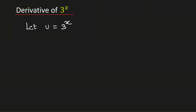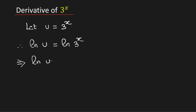Now taking natural logarithm on both sides, we will get natural logarithm of u is equal to natural logarithm of 3 to the power x. Using the rule of logarithms, this will be equal to x times ln 3.